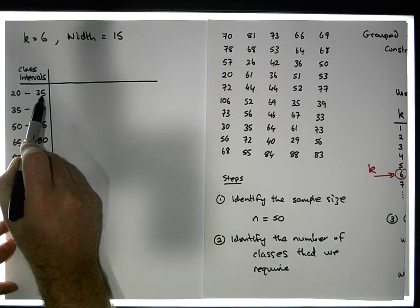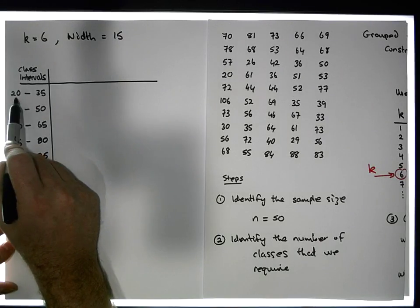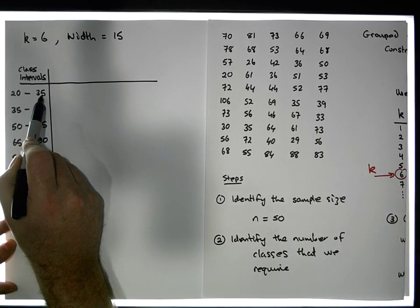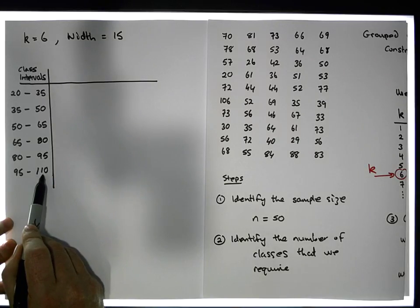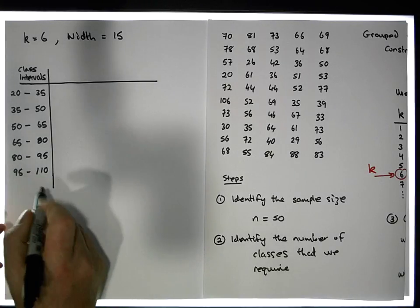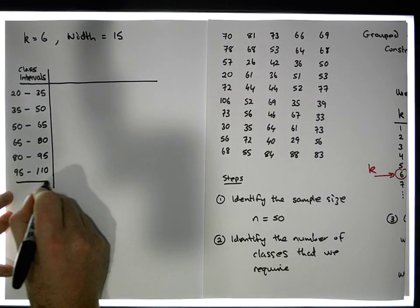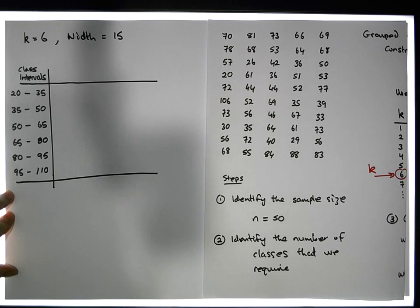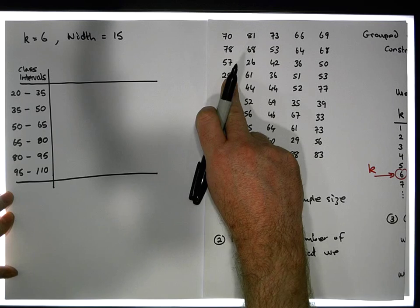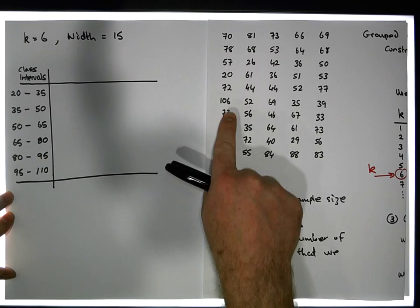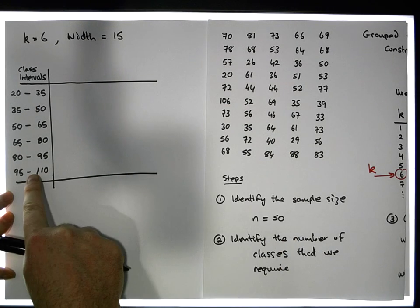The class boundaries are exclusive of upper bounds. When counting observations in a class, I include the 20s but not 35 itself — everything up to but not including 35. Similarly, in the last class I include the 95s but exclude 110. The important thing to note is that every observation is contained within one of our classes. The smallest value is 20 and the largest value is 106, both accounted for.